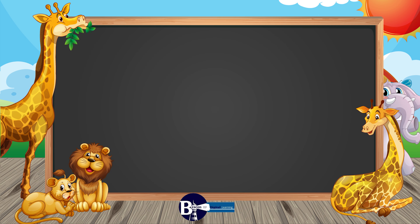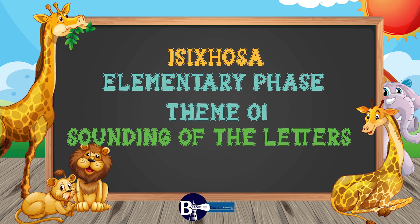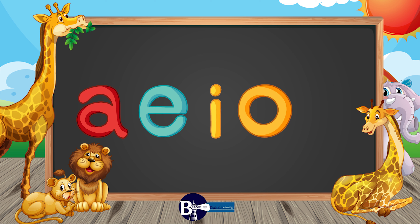We teach how to communicate in Isitosa language. This is the elementary phase, theme one. We start with the sounding of letters of the alphabet called vowels: a, e, i, o, u.